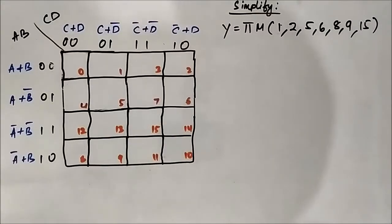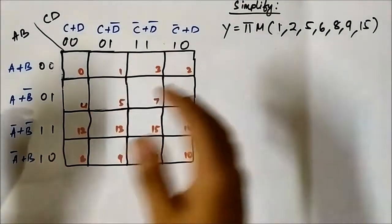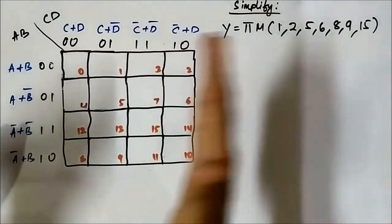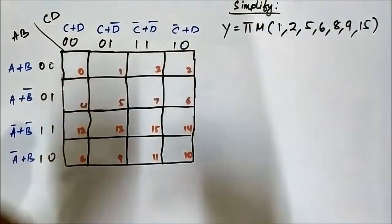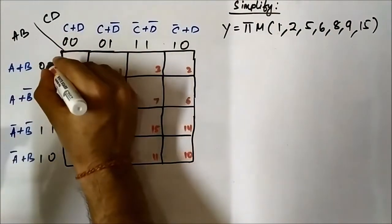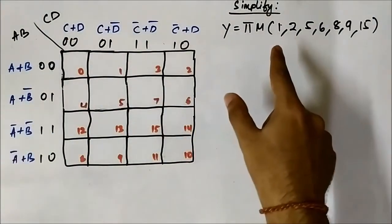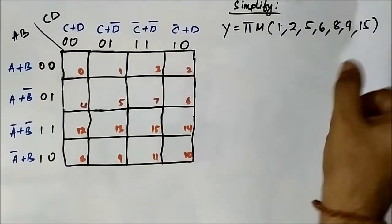This is the third question related to four-variable POS Kmap simplification. We have the Boolean expression given in terms of max term values. What we have to do is simply map these values to the Kmap. We have the format of the Kmap ready with us. The max term values are 1, 2, 5, 6, 8, 9, 15.